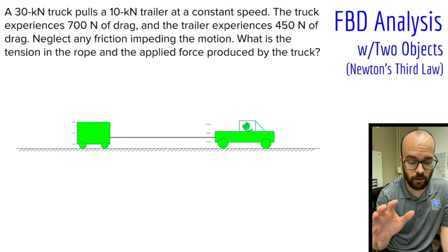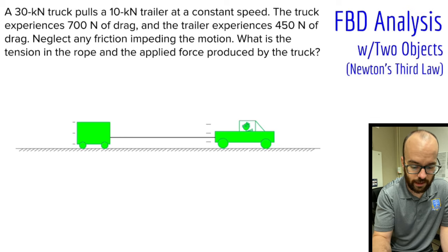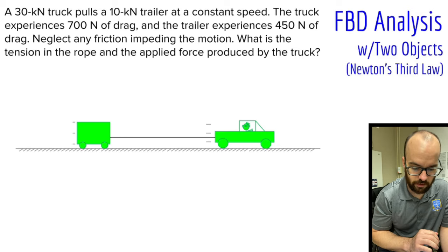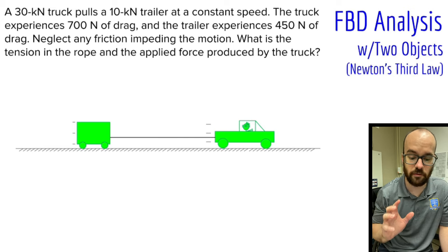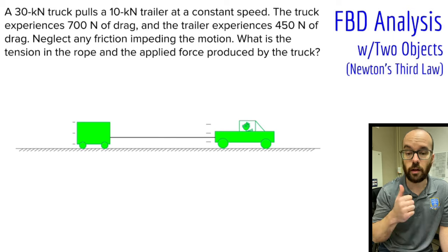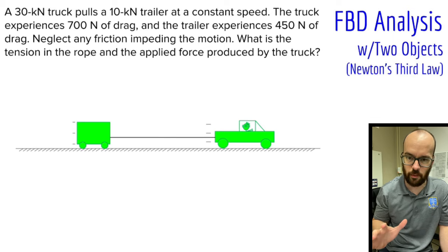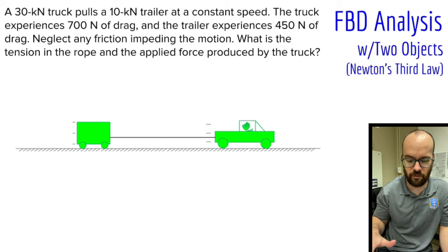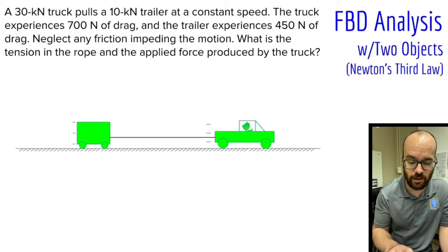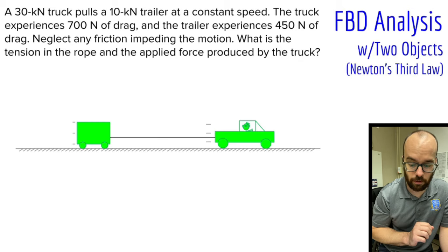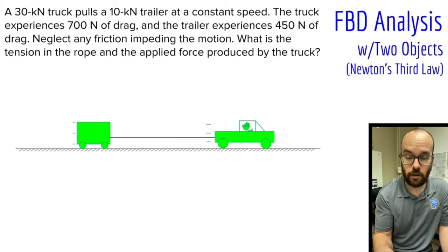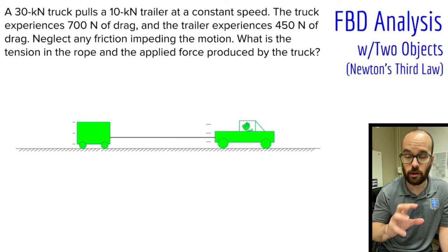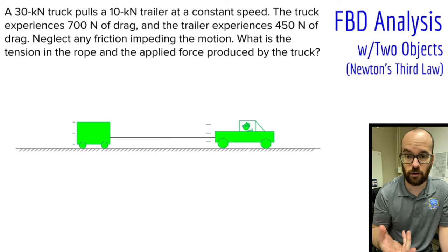The problem says a 30 kilonewton truck pulls a 10 kilonewton trailer at a constant speed. The truck experiences 700 newtons of drag. The trailer experiences 450 newtons of drag. We'll neglect any friction to simplify the problem. We need to find the tension in the rope and the applied force produced by the truck. We'll start by identifying the forces and drawing a free body diagram.